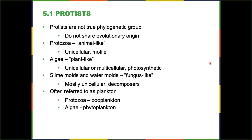Our animal-like protozoa move, eat, sense and respond to environments just like animals. Algae are photosynthetic — some unicellular, some multicellular — which is one of the key features of plants. Our fungus-like slime molds and water molds are decomposers, a very important part of the food chain. Most are unicellular, but there are some multicellular slime molds and water molds. We often refer to these as plankton — protozoa can be called zooplankton, and algae are phytoplankton — a term typically used in aqueous, usually marine environments.